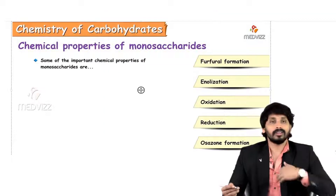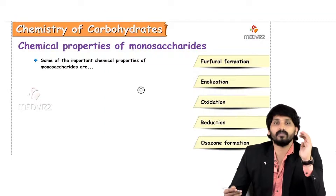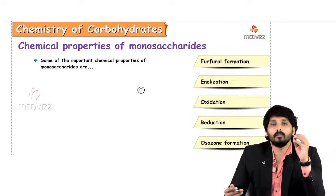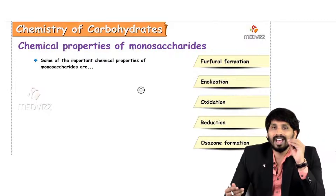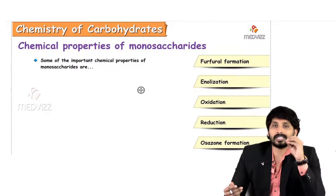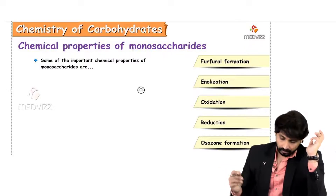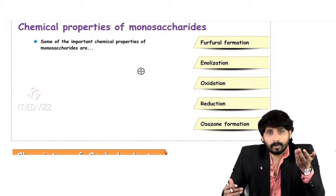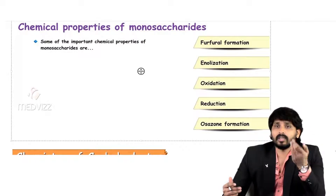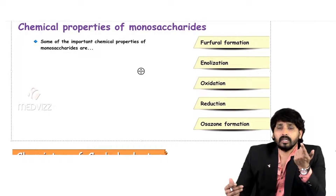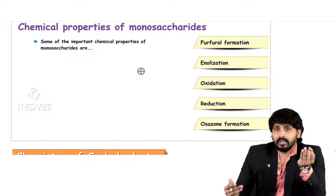Let us discuss the chemical properties of monosaccharides. Monosaccharides are the simplest sugar units of carbohydrates and they have free functional groups, which are responsible for their chemical properties. Under chemical properties, the reactions we will study are: furfural formation, enolization, oxidation, reduction, and osazone formation.